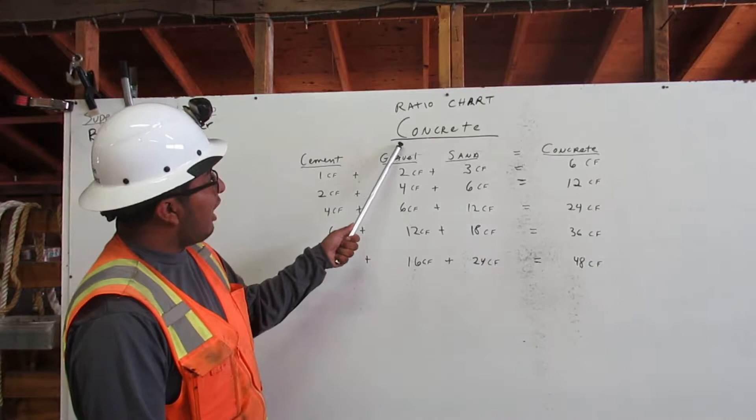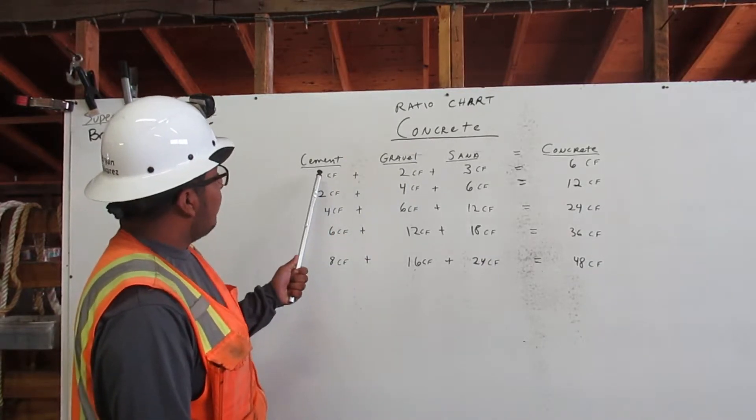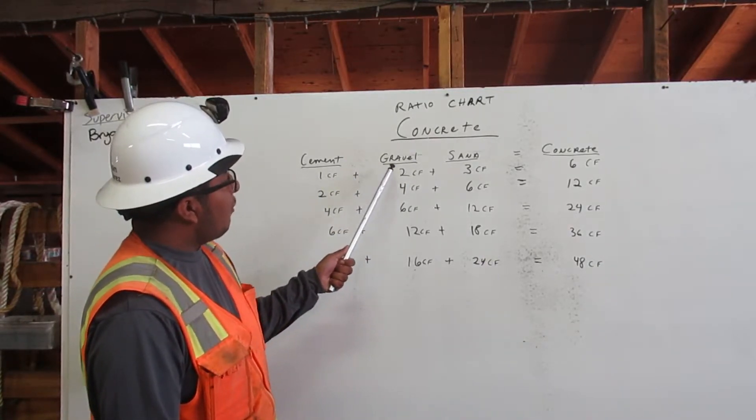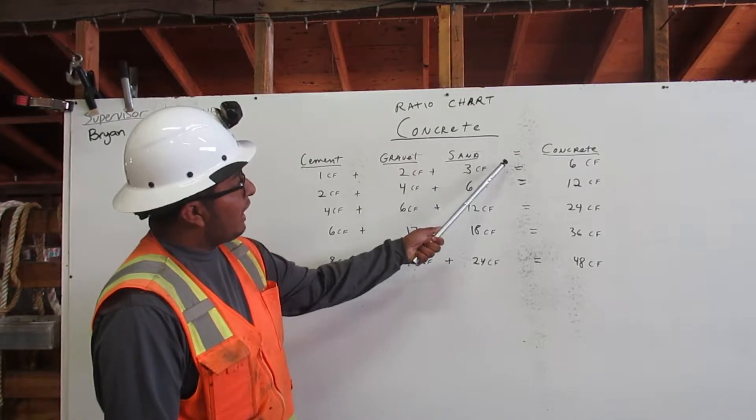Here we have a ratio chart for concrete. Cement plus gravel plus sand will give us concrete.